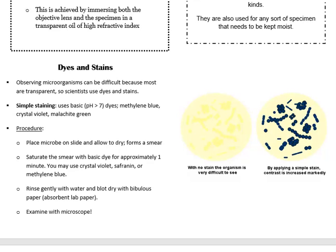Observing microbes can be difficult because most of them are transparent, so scientists use dyes and stains. Simple staining uses basic dyes — pH less than 7 — such as methylene blue, crystal violet, and malachite green. Place the microbe on the slide and allow it to dry to form a smear. Saturate the smear with the basic dye for approximately one minute — you may use crystal violet, safranine, or methylene blue. Rinse gently with water and blot dry with bibulous paper, which is basically just like a paper towel. Then examine with the microscope.